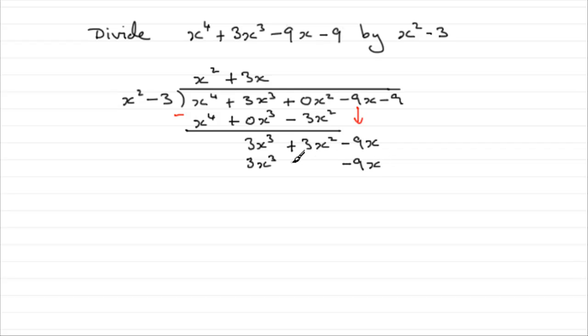And again, we've got no x squared term, so might as well put no x squared term in there. We now subtract to find out what the remainder is. And we've got no x cubed here. 3x squared minus no x squared is going to be 3x squared. Minus 9x minus minus 9x. Well, that gives us 0x. So, I'm going to put that in, actually, plus 0x.